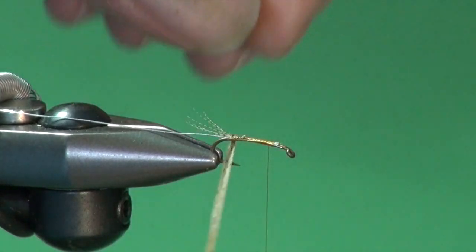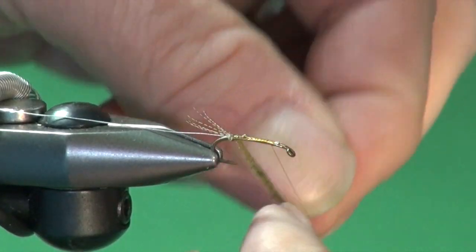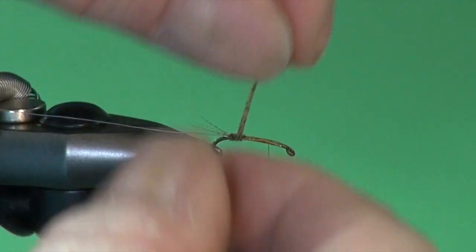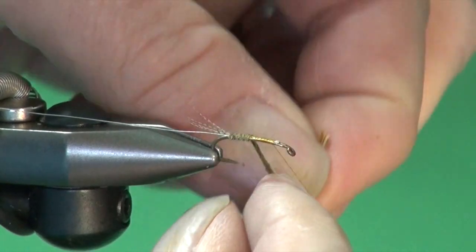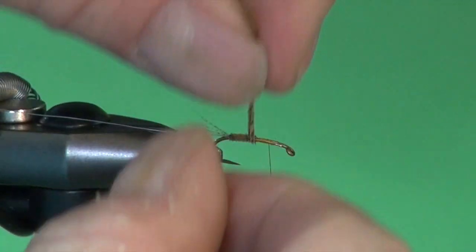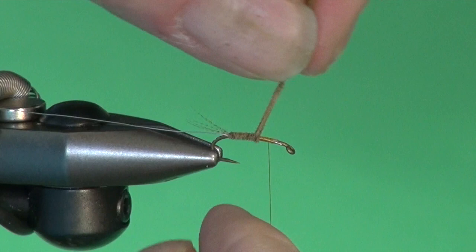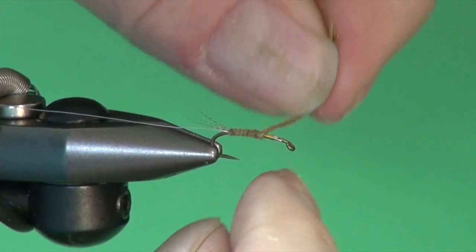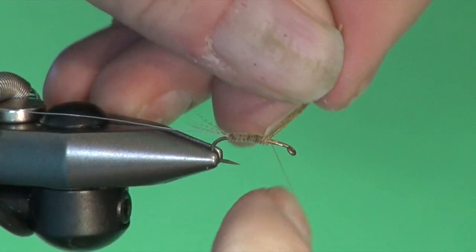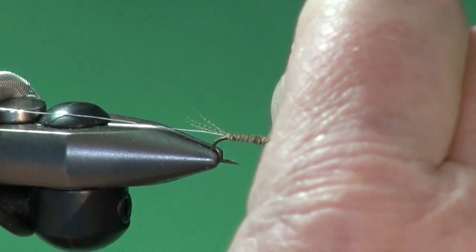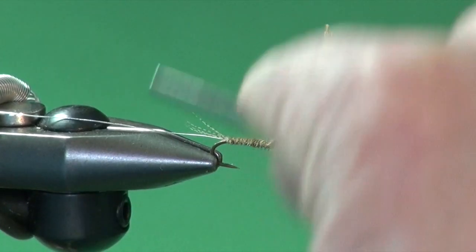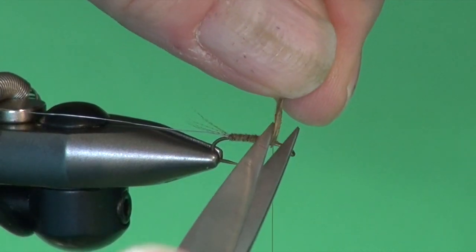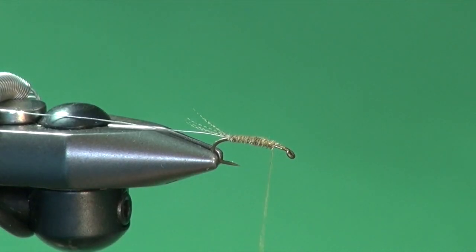We're going to come in and grab our turkey slip and just start winding close touching turns, adjacent turns right next door to each other. Overlap them more as you work forward to build up a nice gradual body taper. We're going to come right up where our thread is hanging. Tie off. Trim away the excess.